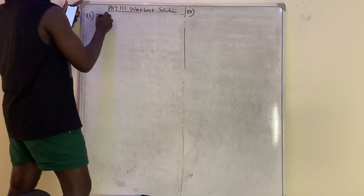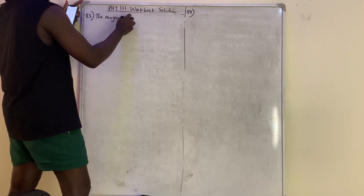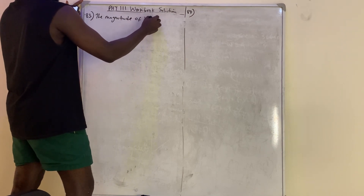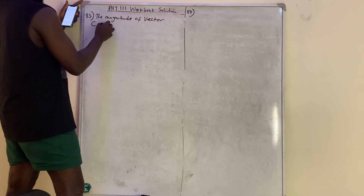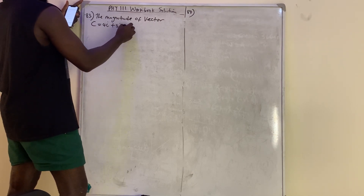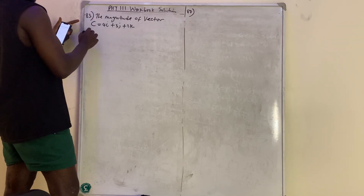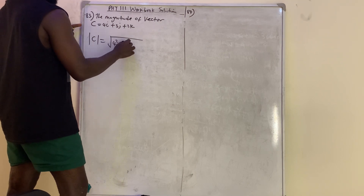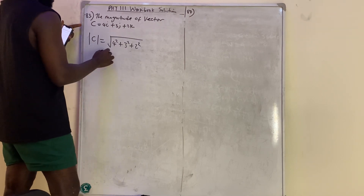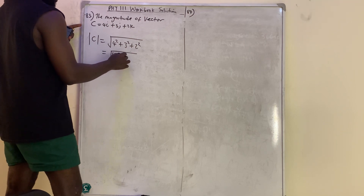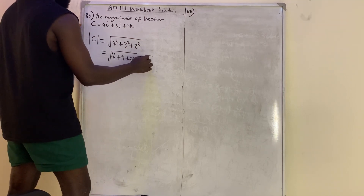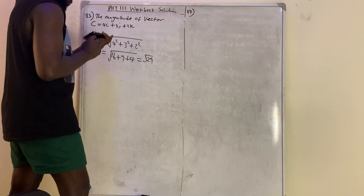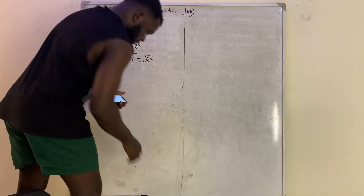Question number 83: find the magnitude of vector c which is equal to 4i plus 3j plus 2k. The magnitude of vector c is equal to the square root of 4 squared plus 3 squared plus 2 squared, which gives us the square root of 16 plus 9 plus 4, which is the square root of 29.